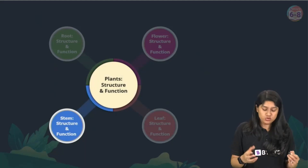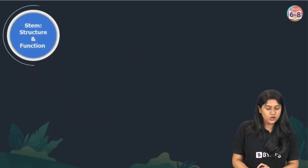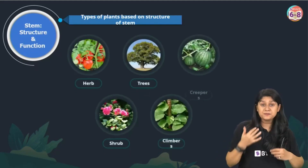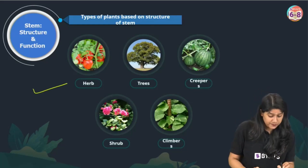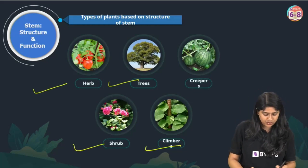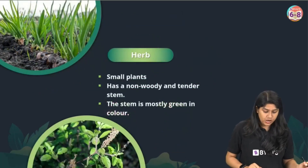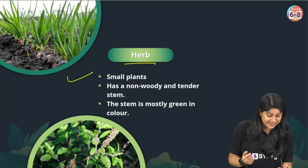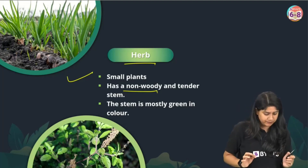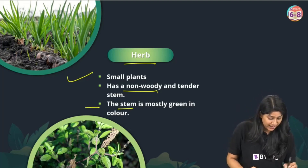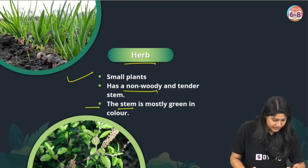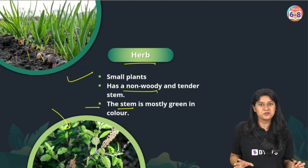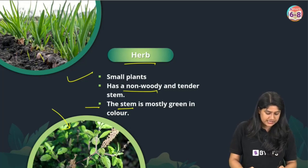Now let's discuss about the stem. The stem or shoot is above the ground, and plants can be categorized into different types based on their stem: herbs, trees, creepers, shrubs, and climbers. Herbs are very small plants — they don't have a woody stem, they have a very soft and tender stem that is mostly green. Examples include grass and tulsi.